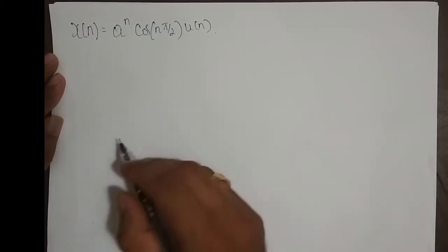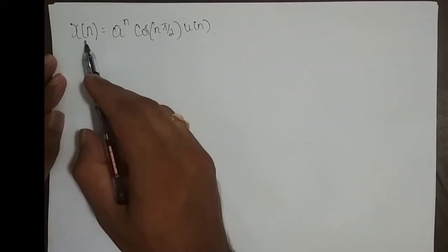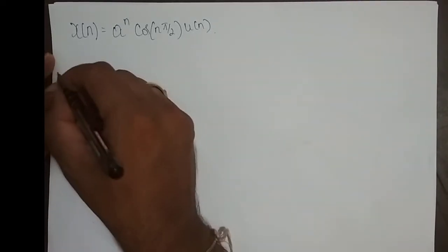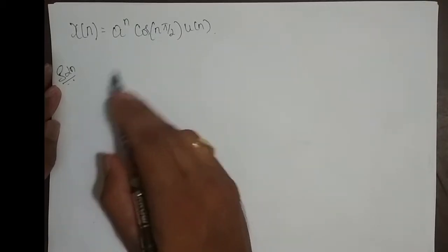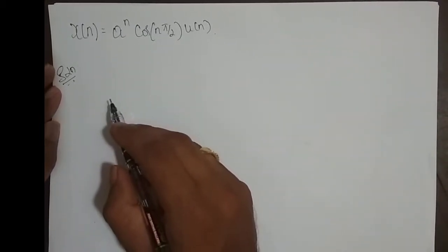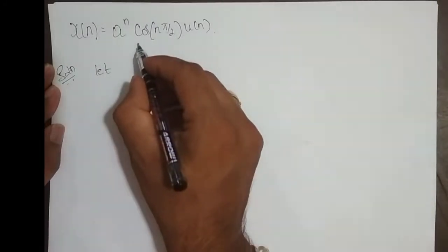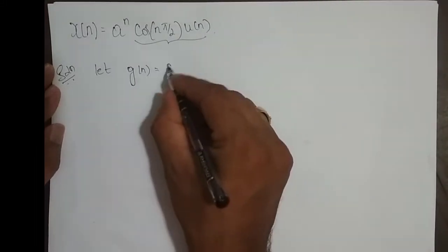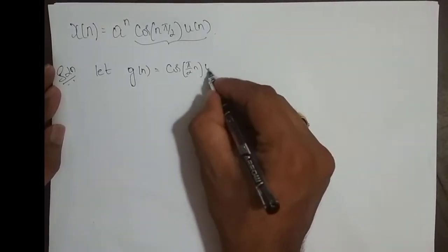We shall continue with the Z-transform problems using properties. The sequence is x(n) = aⁿ cos(nπ/2) u(n). So for the solution, I need to find its Z-transform and ROC using appropriate properties of the Z-transform. I'll assume this part as g(n) — an intermediate signal g(n) = cos(π/2 · n) u(n).